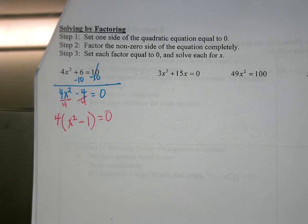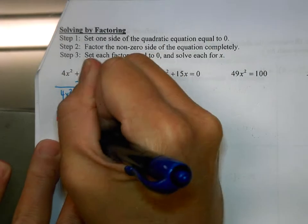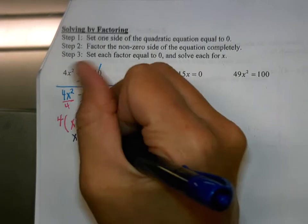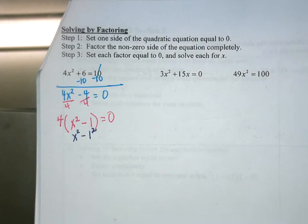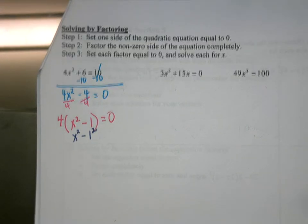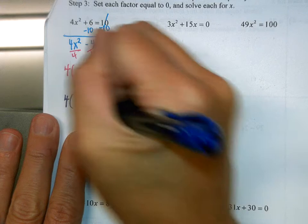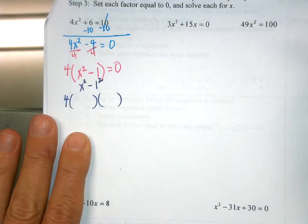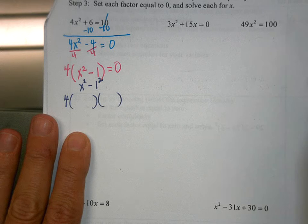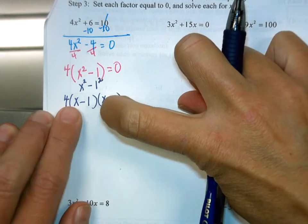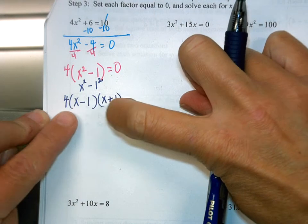So we still have our 4 in front, and we make our two parentheses. X squared minus 1 squared factors to be x minus 1 and x plus 1 — you're separating each of the squares in front and then separating the squares in the back. 1 gets a minus, 1 gets a plus. Can I factor this any further? No.